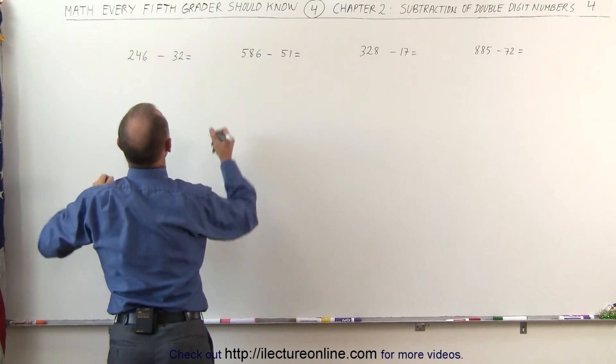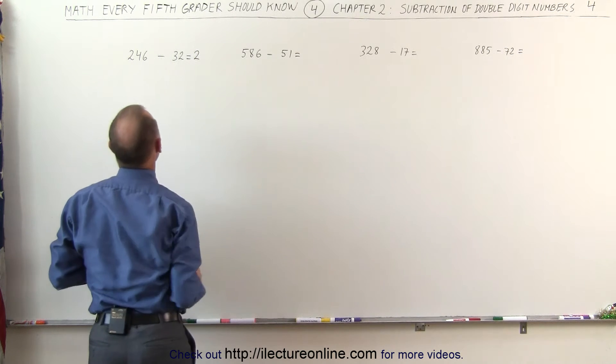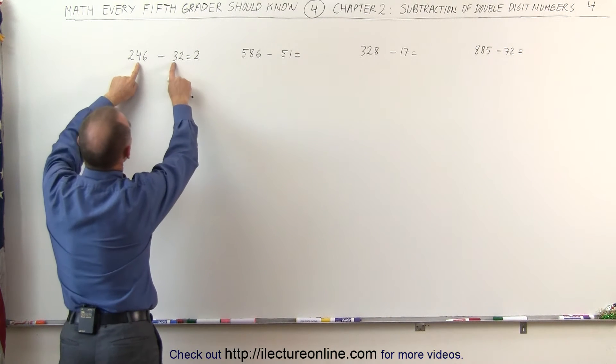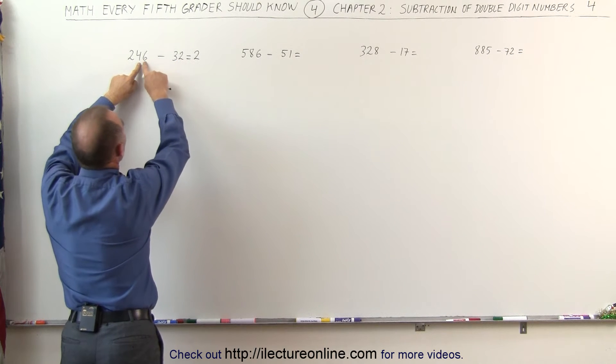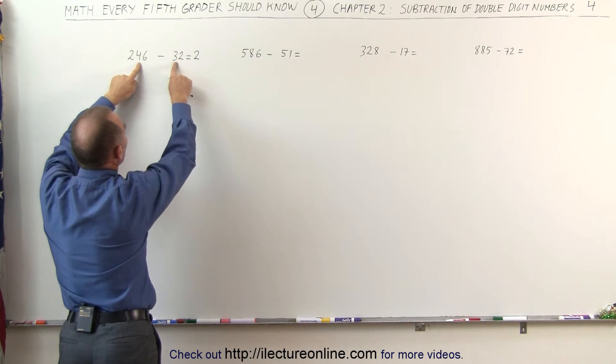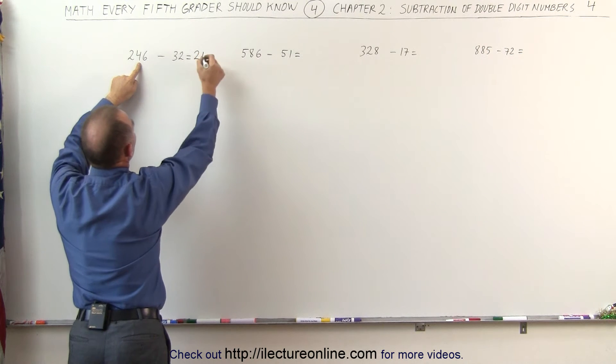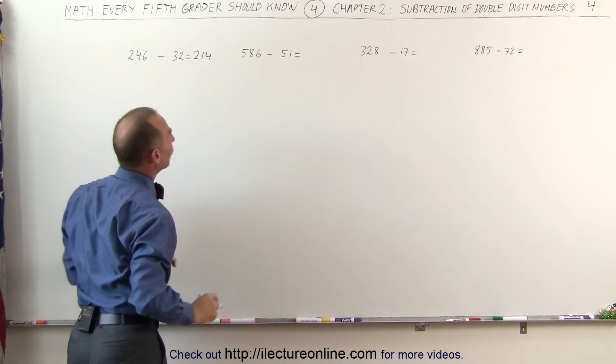So in this case, this will become 200 and some remainder right here. Then we'll look at these two digits. 3 is smaller than 4, and 2 is smaller than 6, so we simply subtract 3 from 4, that gives us 1, and 2 from 6, that gives us 4. The answer is 214.